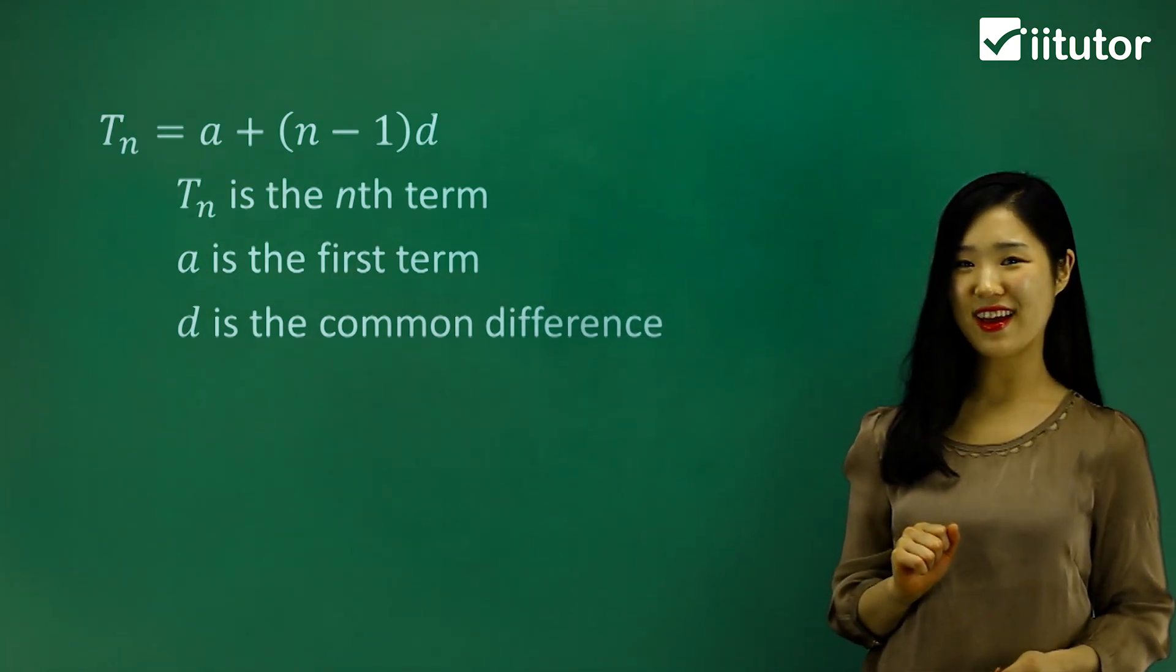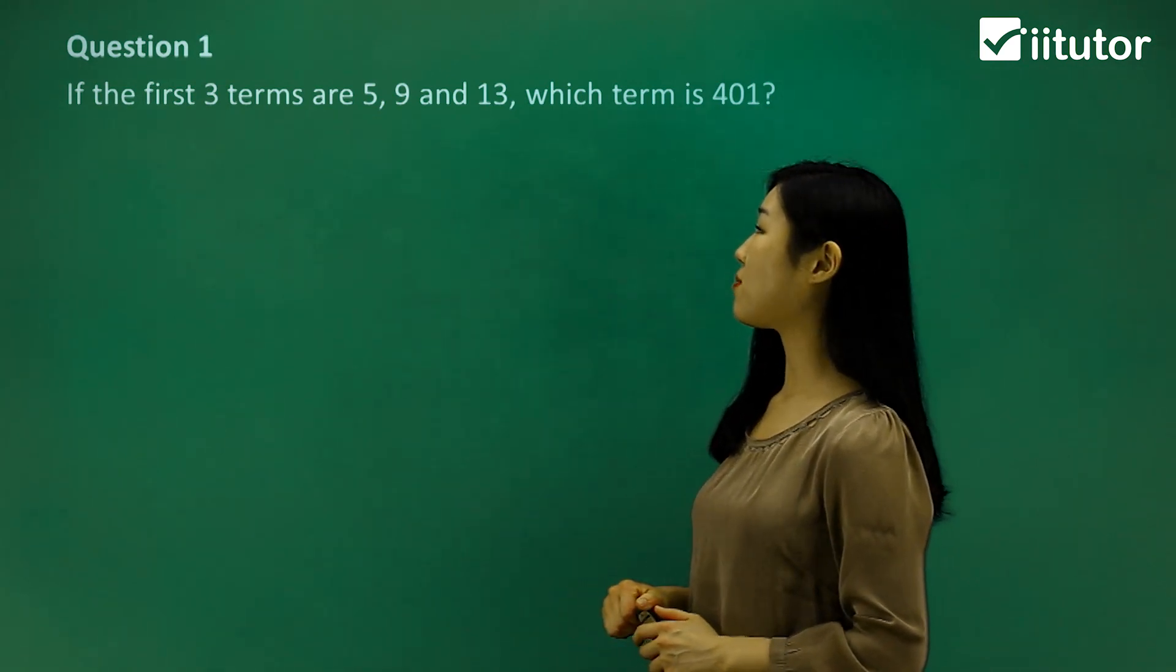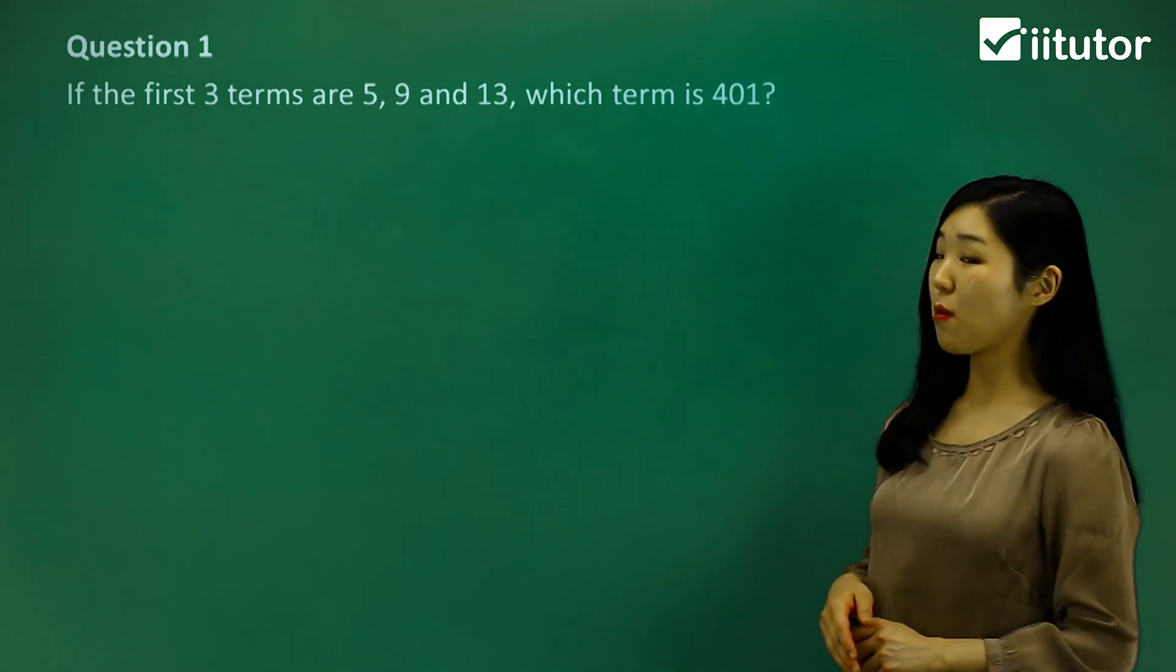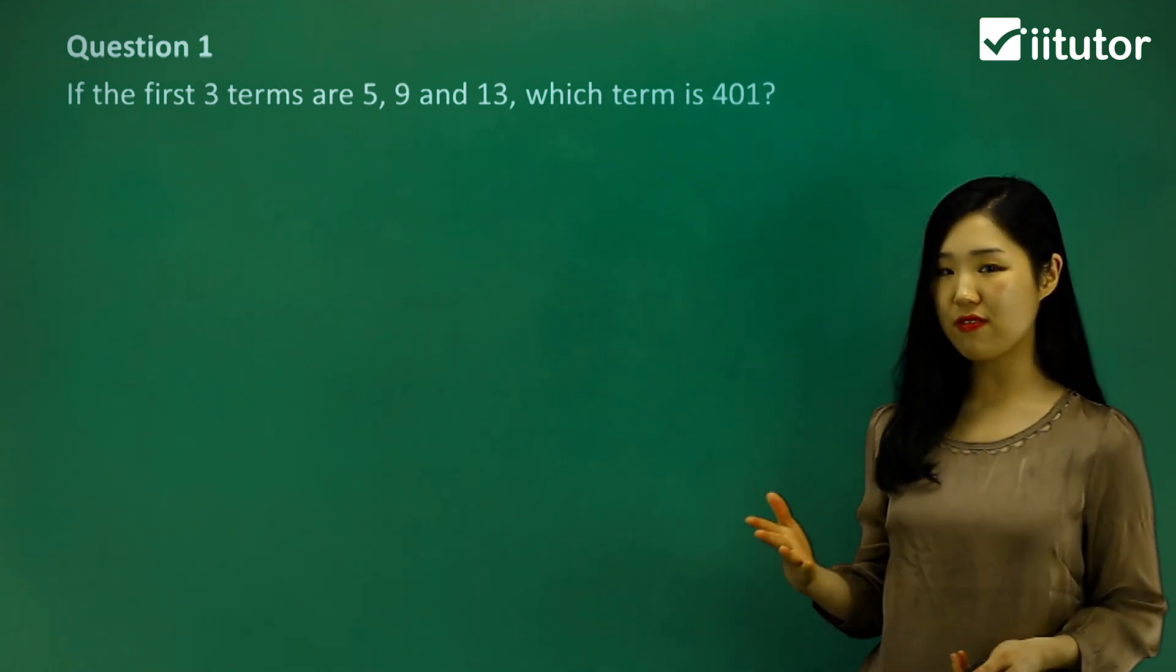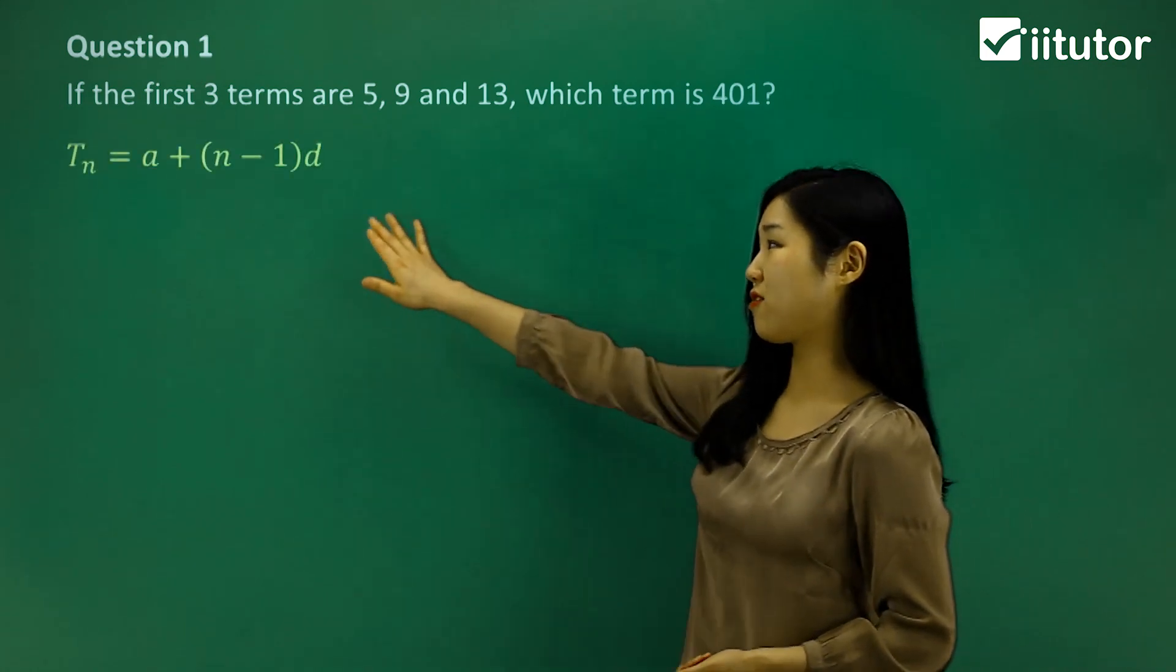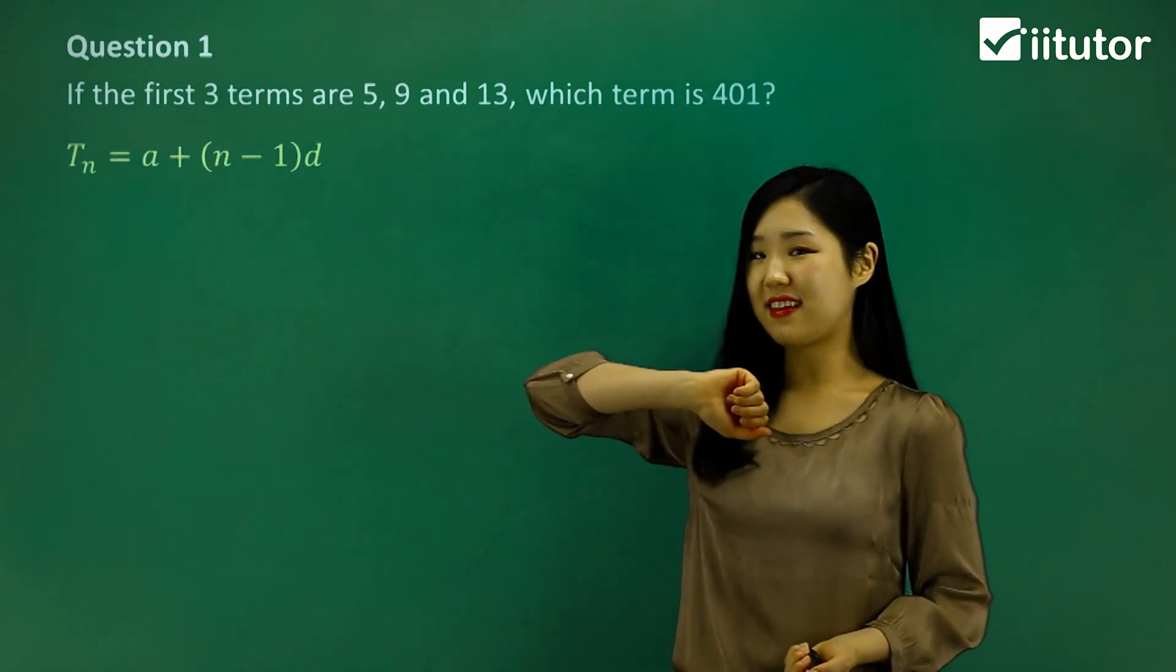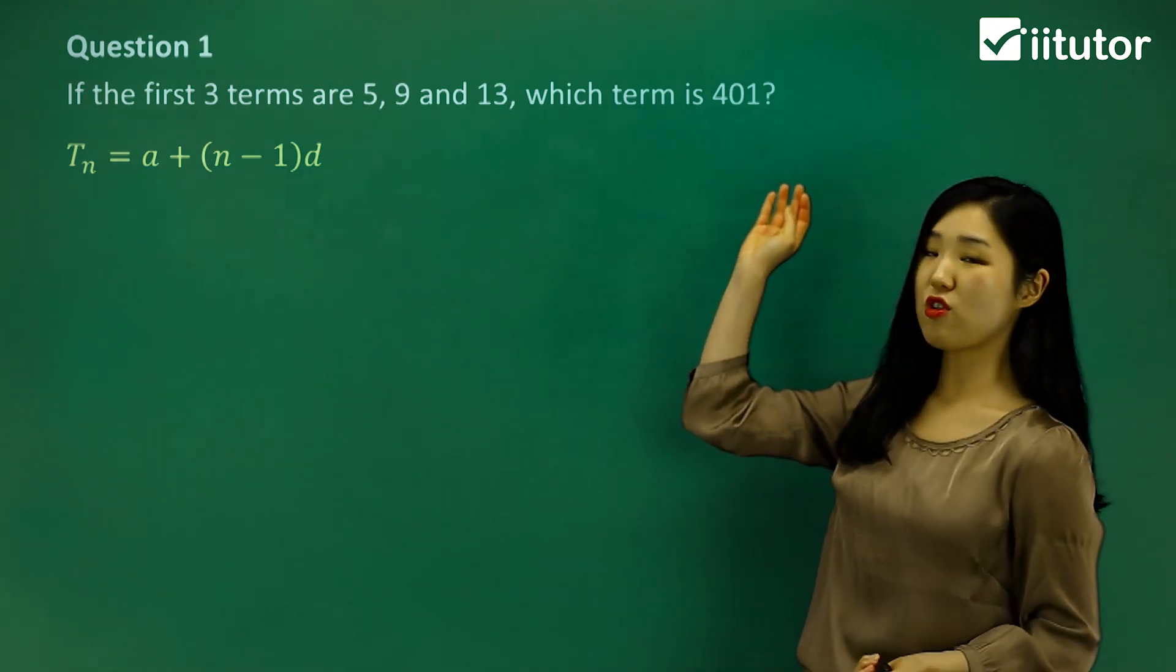Make sure you know what each of these parameters mean and the rule: tn equals a plus n minus 1 times d, which gives us the nth term. Let's try some questions now. Question one: if the first three terms are 5, 9, and 13, which term is 401? They give us the first three terms. From that, you can see we're going to use this formula: tn equals a plus n minus 1 times d.